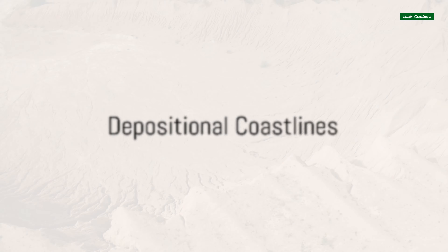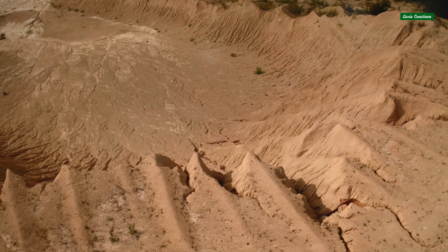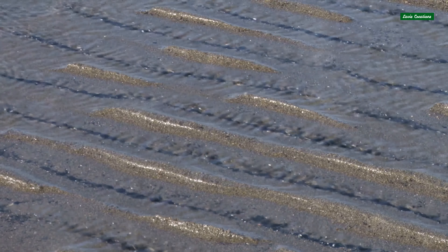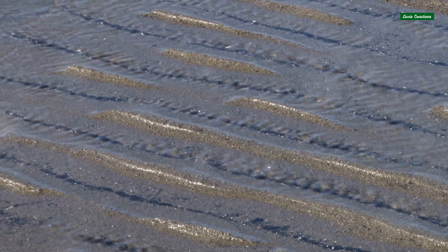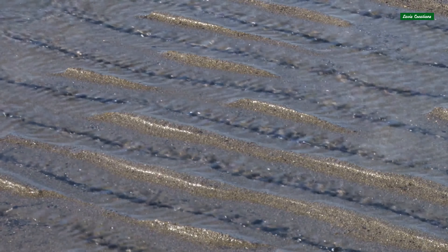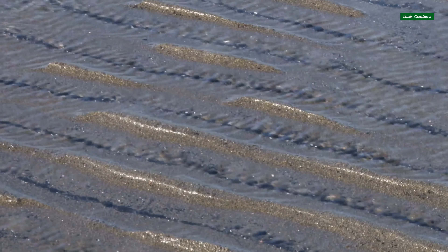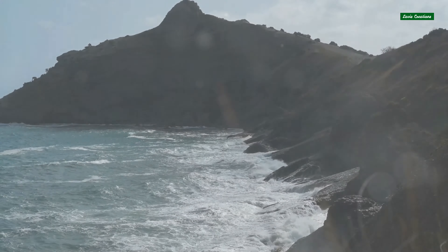But the story of coastlines doesn't stop there. We also have depositional coastlines, formed by the accumulation of sand, gravel, and other sediment. Picture the relentless ebb and flow of the tide, carrying tiny grains of sand to the shore, slowly building up beaches, dunes, and barrier islands over thousands of years. The final type of coastline we'll explore today is the erosional coastline.